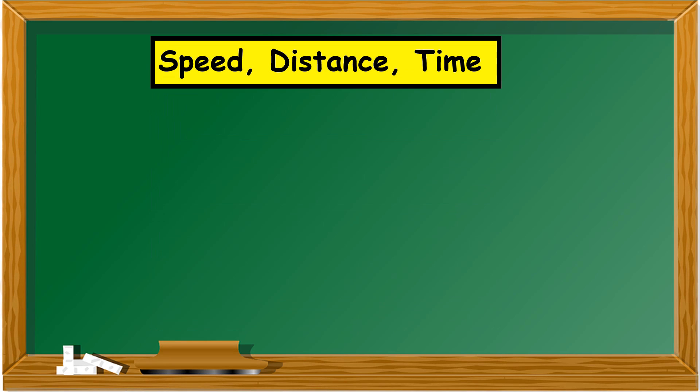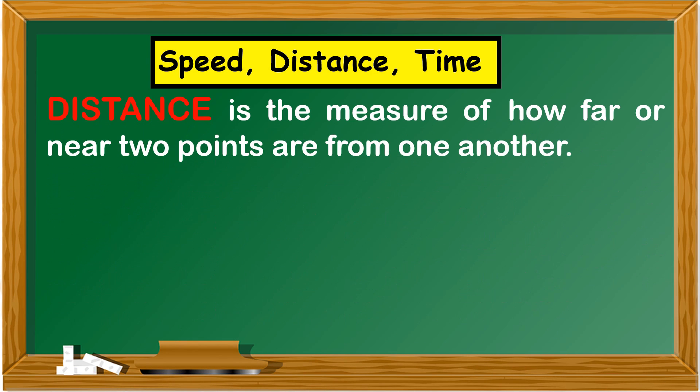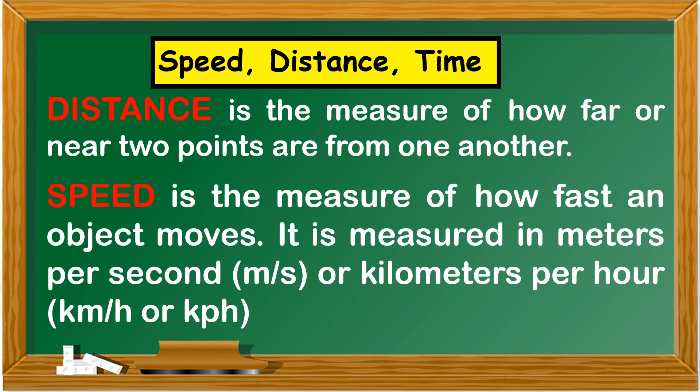Speed, distance, and time. Distance is a measure of how far or near two points are from one another. Speed is a measure of how fast an object moves. It is measured in meters per second or kilometers per hour.